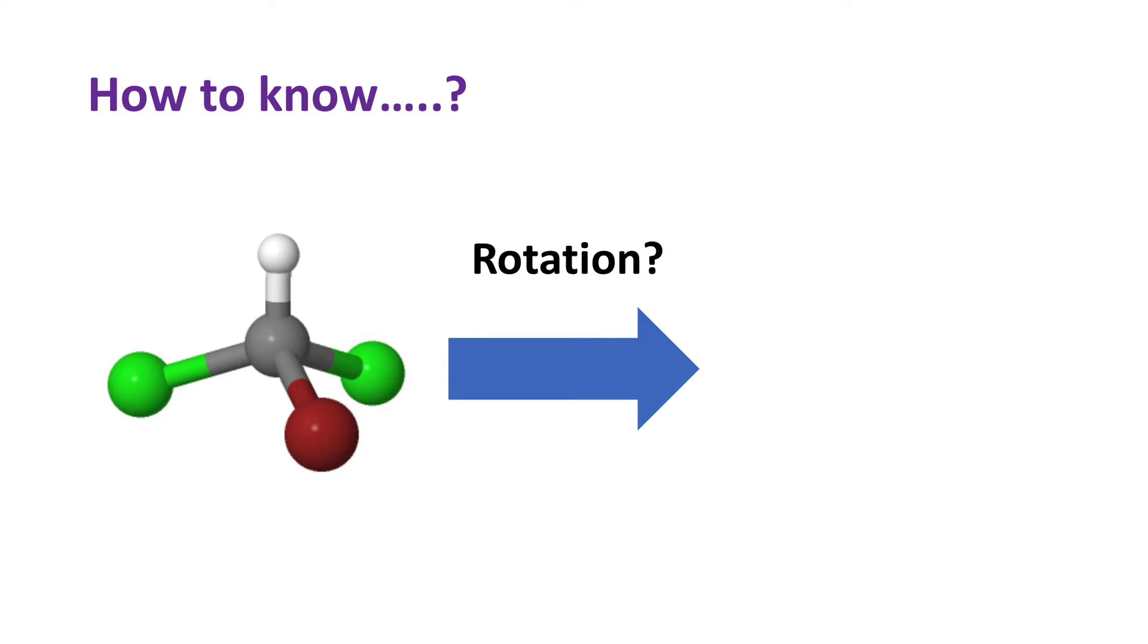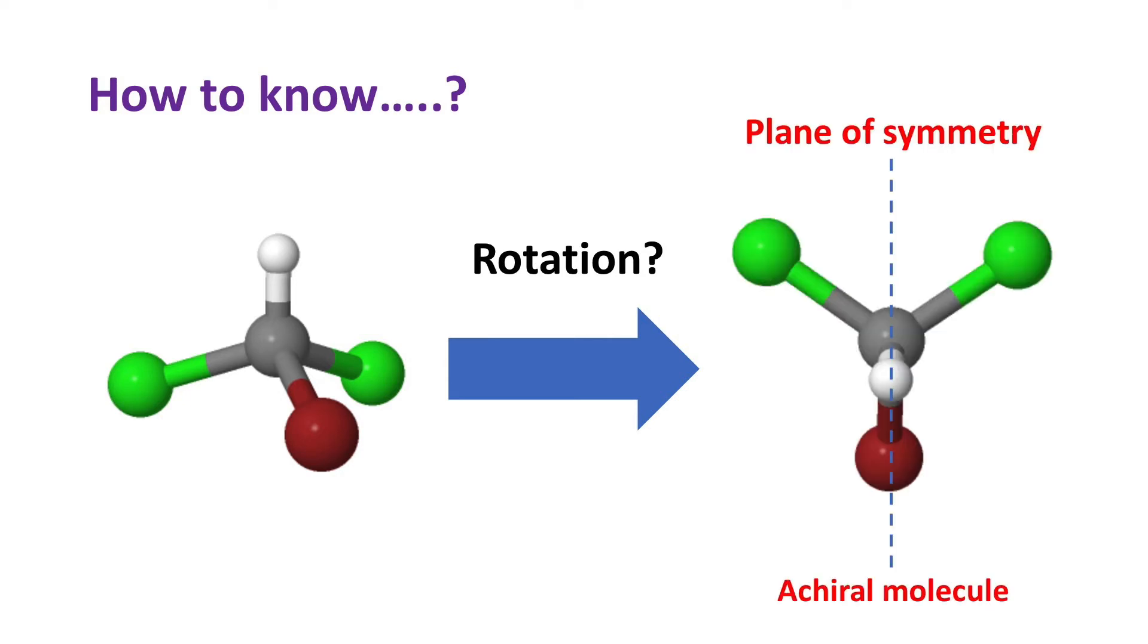Take this molecule as an example. After rotation, if we can see there exists a mirror plane or plane of symmetry on the central carbon atom, that means the molecule is achiral.